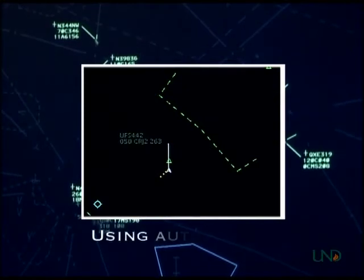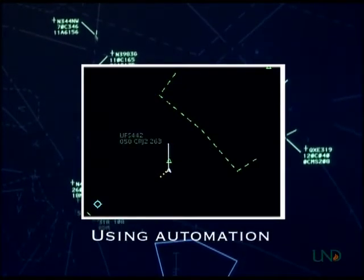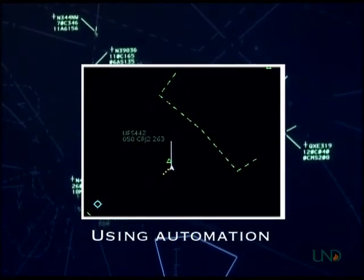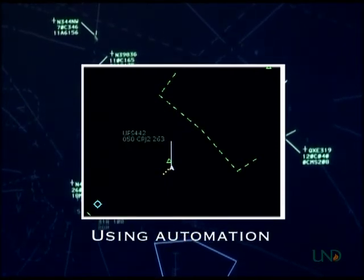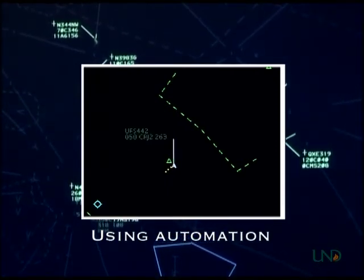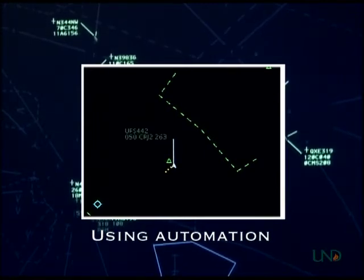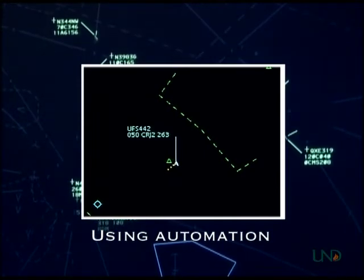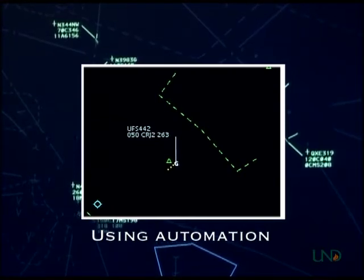Automated handoffs can be done for most IFR aircraft entering or leaving the airspace, provided that there are no abnormal items depicted in the data block, such as CST, OLD, AMB, or NAT. Simply initiate the handoff, and when radar identification has been accepted by the receiving controller, transfer communications.